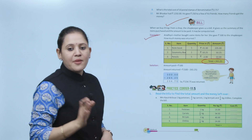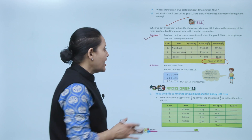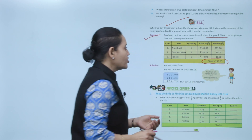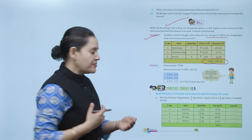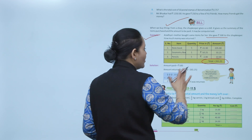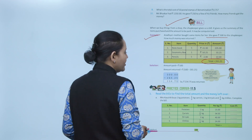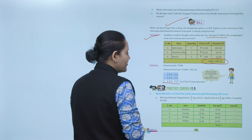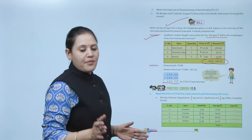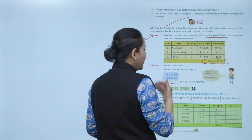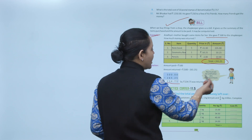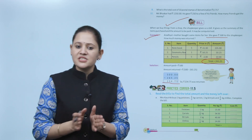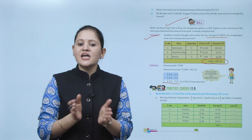Aaradya spent some amount and she gave a 500 rupees note. How much money did she get back? 500 minus 265.25 equals rupees 234.75 — this is the amount she got back. You must ask for a bill when you make a purchase; whenever you buy something, always ask for the bill.